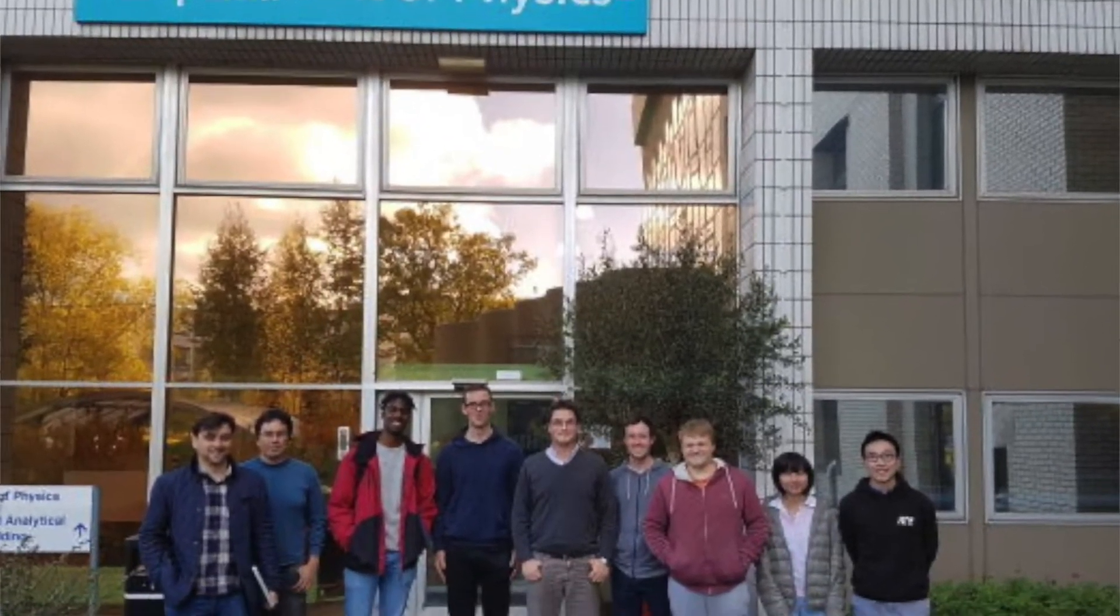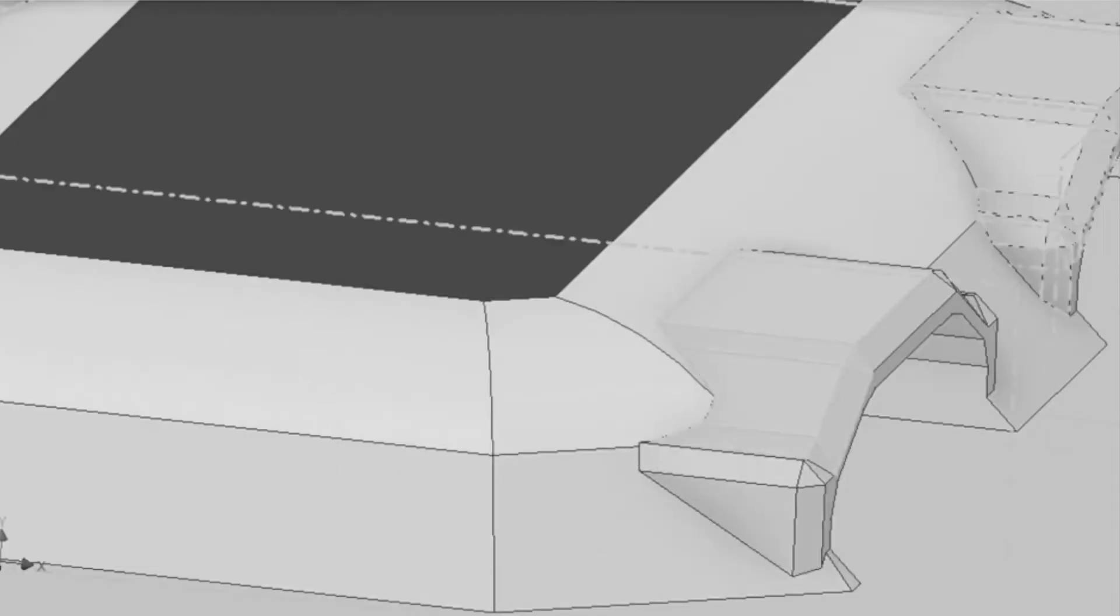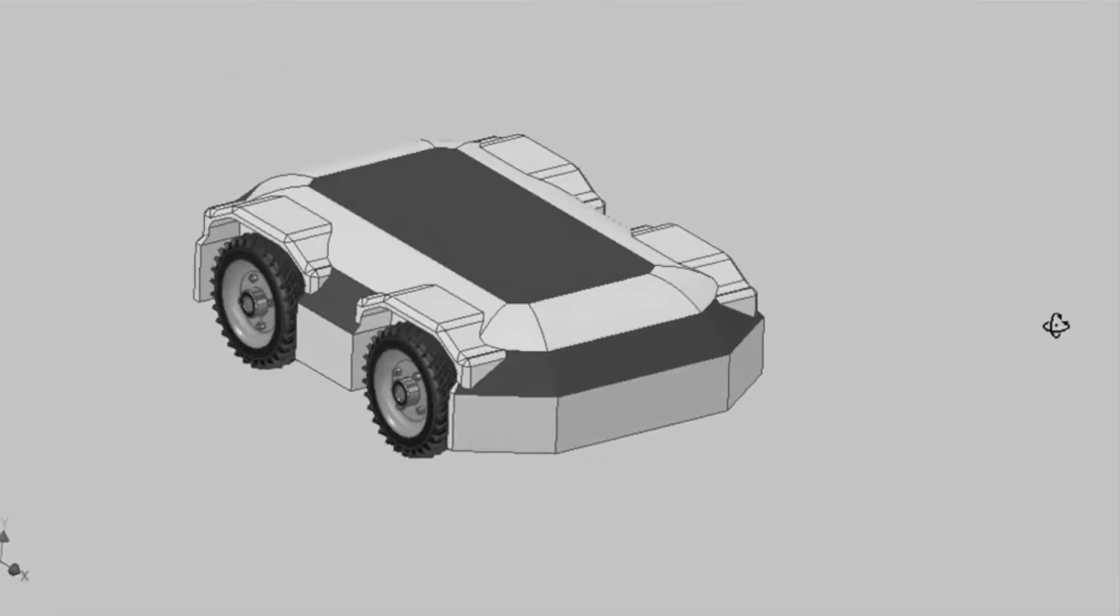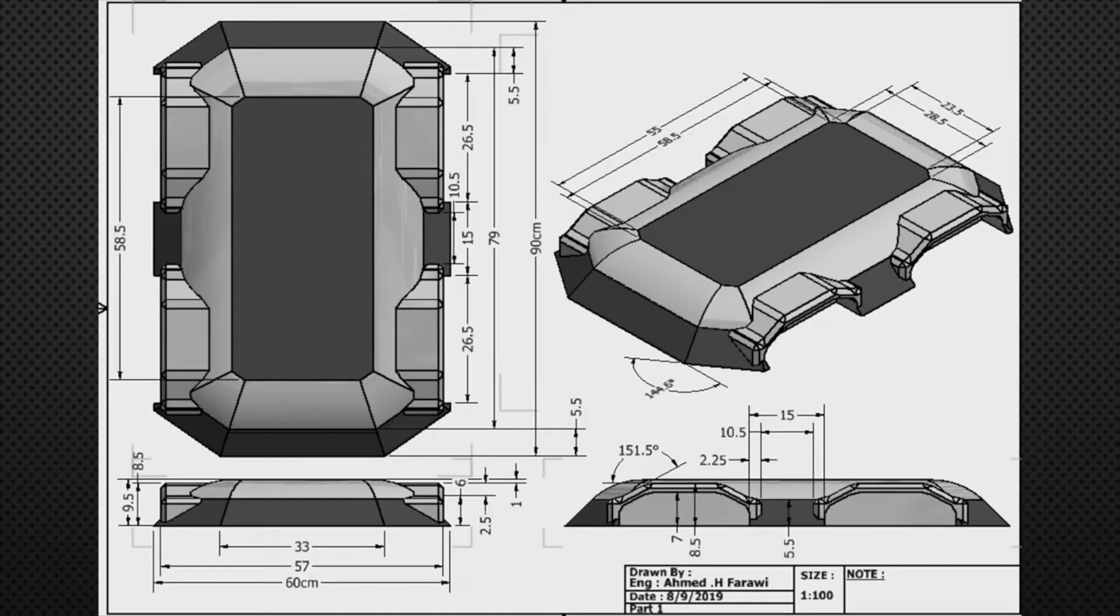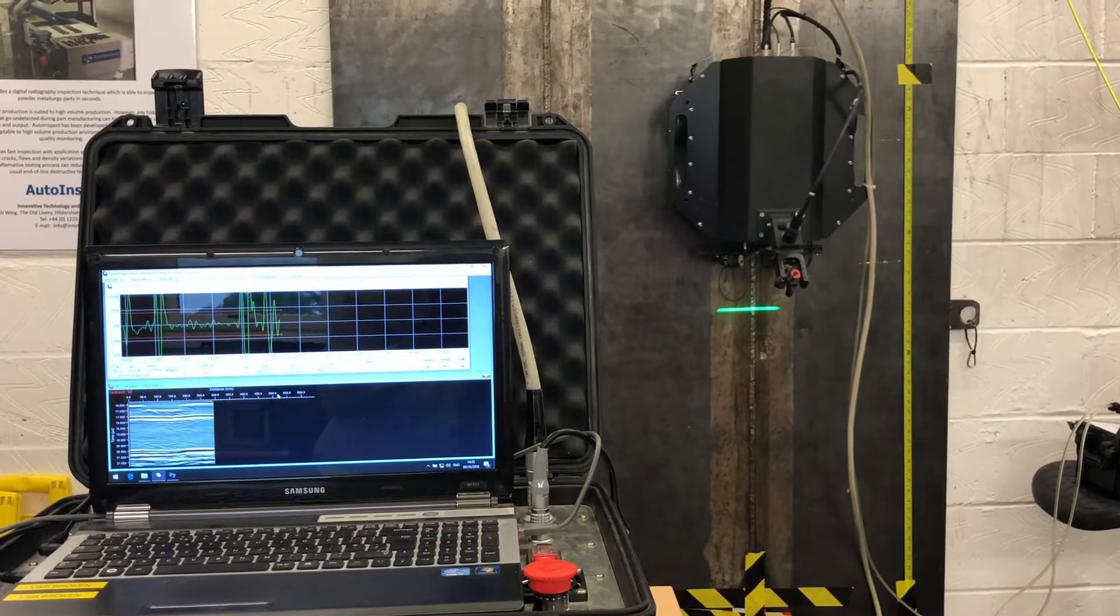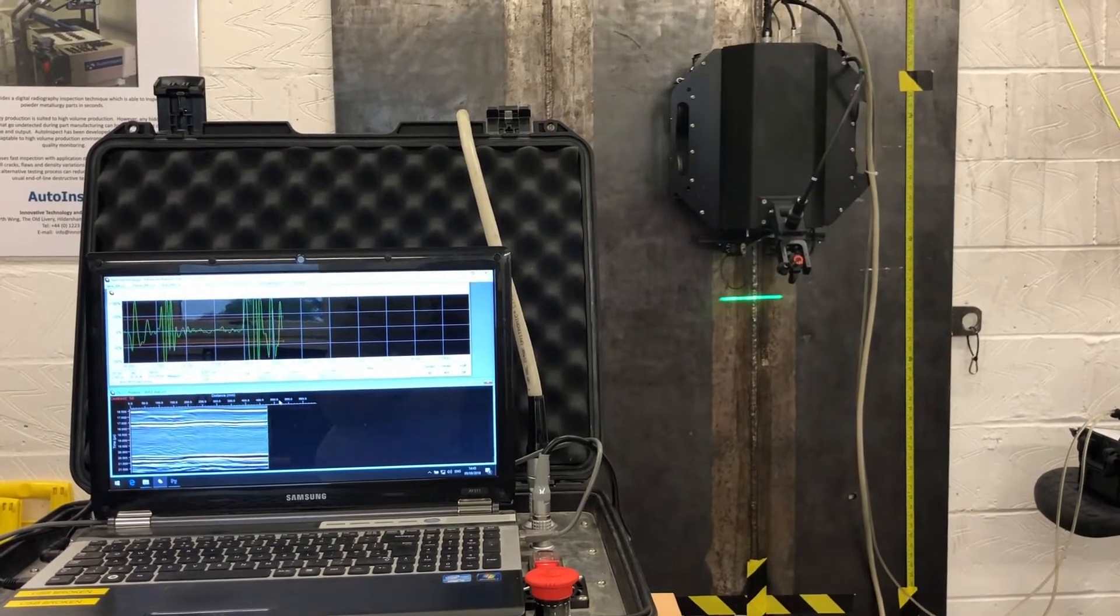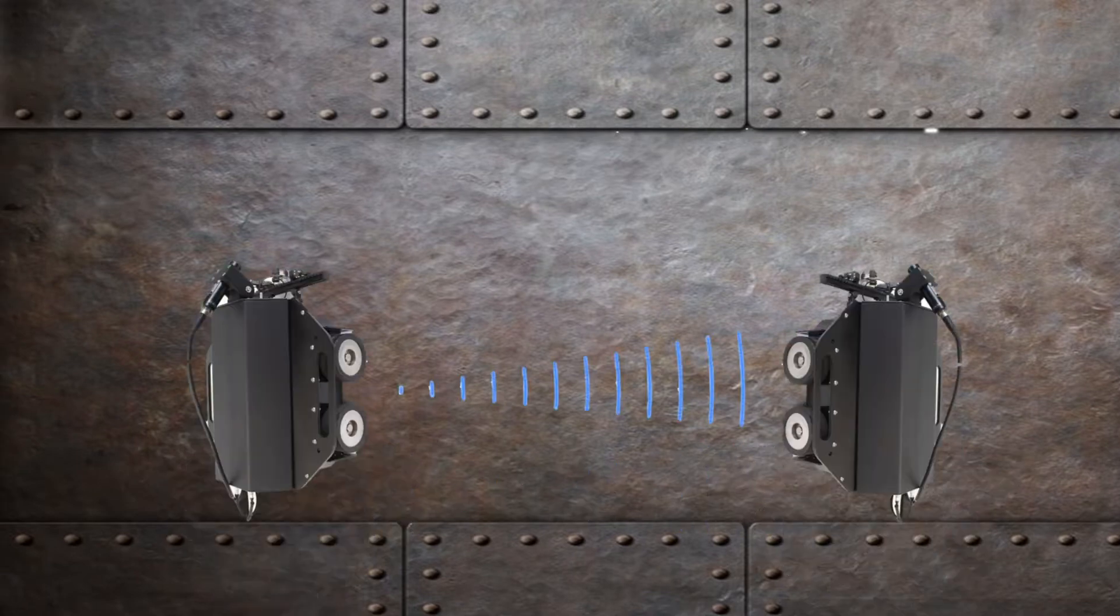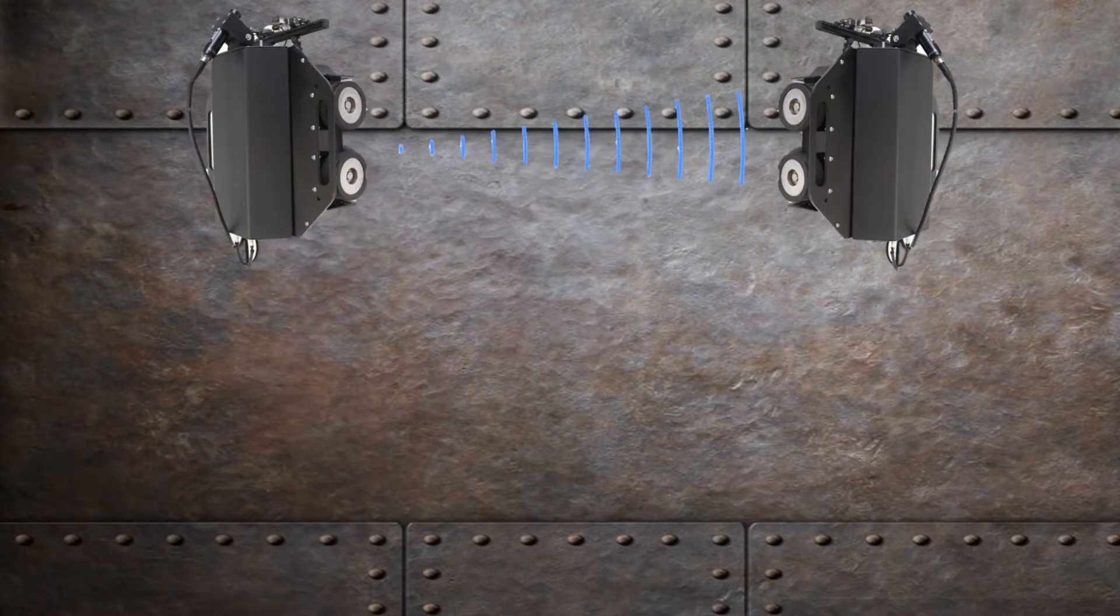To do this, the transmitter and receiver of an electromagnetic acoustic transducer will need to be mounted to the robots using a mechanism that we will design and test using CAD simulations. The transmitter and receiver need to align automatically once the robots are placed on the structure, so motors and sensors will be used to actuate any necessary rotation.